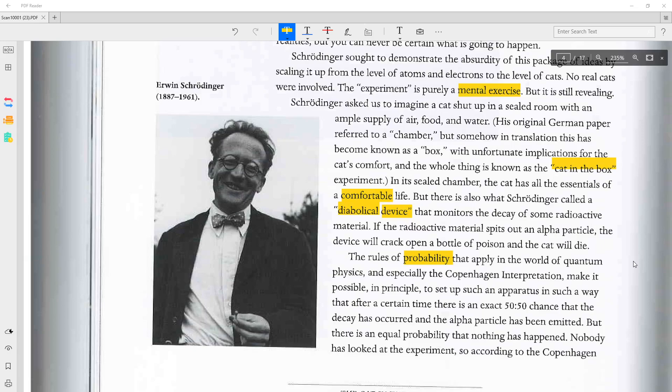Schrödinger asked us to imagine a cat shut up in a sealed room with an ample supply of air, food, and water. His original German paper referred to a chamber, but somehow in translation it has become known as a box, with unfortunate implications for the cat's comfort. And the whole thing is known as the cat-in-the-box experiment.